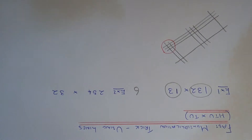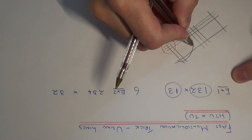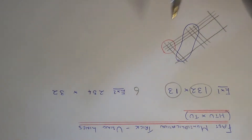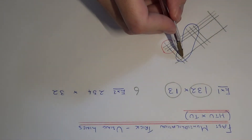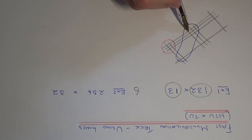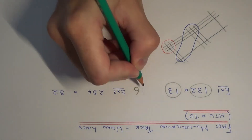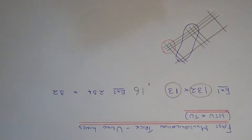We then need to count all the intersections here. So we have one, two, three, four, five, six, seven, eight, nine, ten, eleven. So we put the one here, and we need to carry the first digit underneath into the next column.